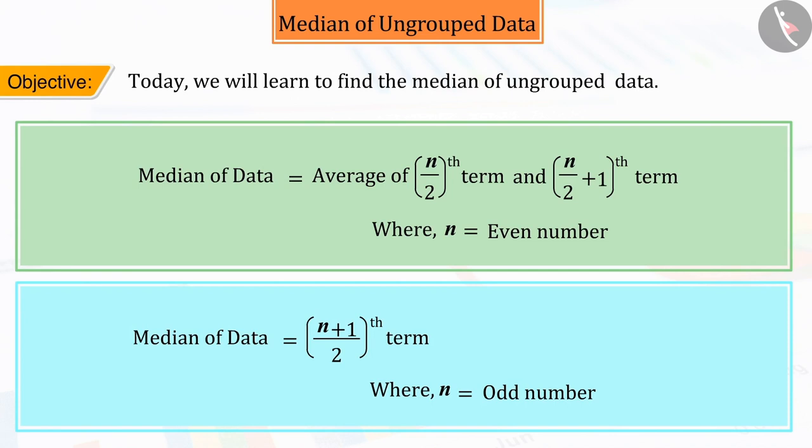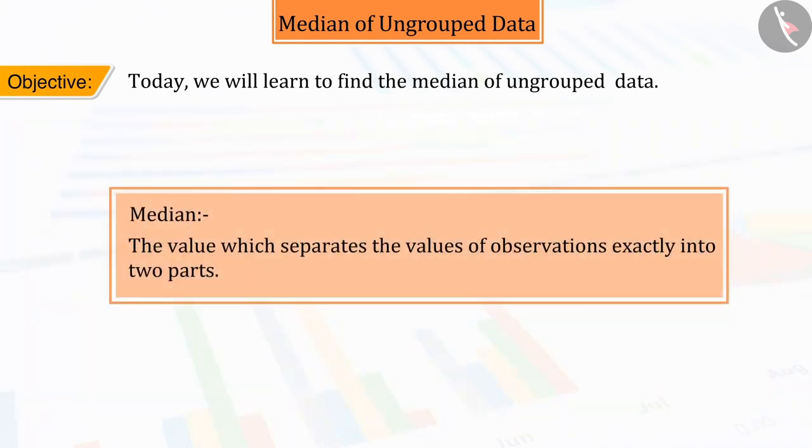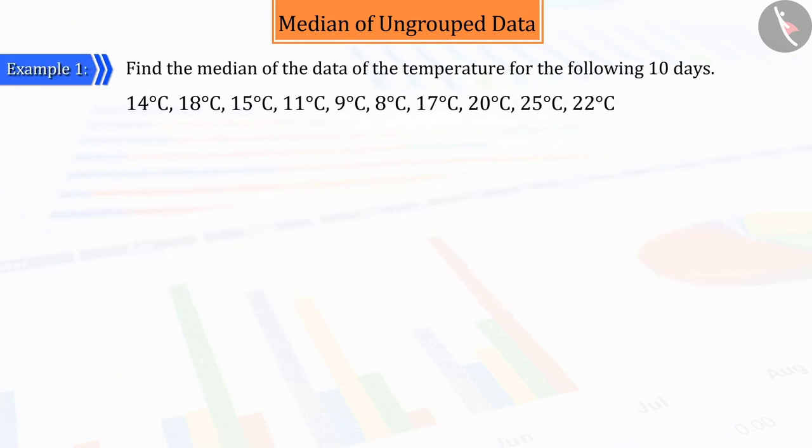We can assume from the name median that there must be some involvement of center point here. This means that the median is the value which separates the values of observations exactly into two parts.